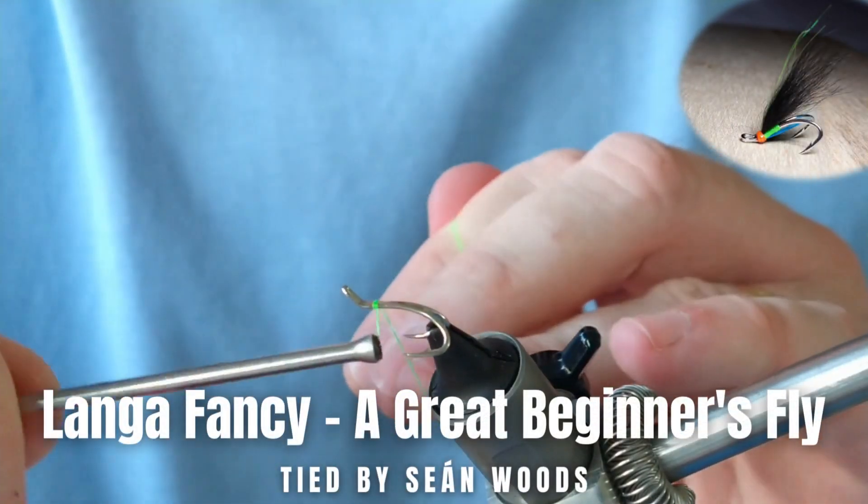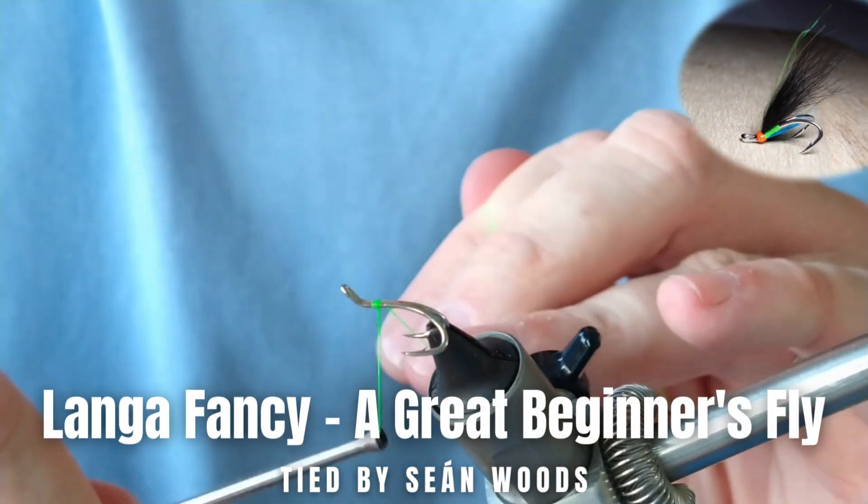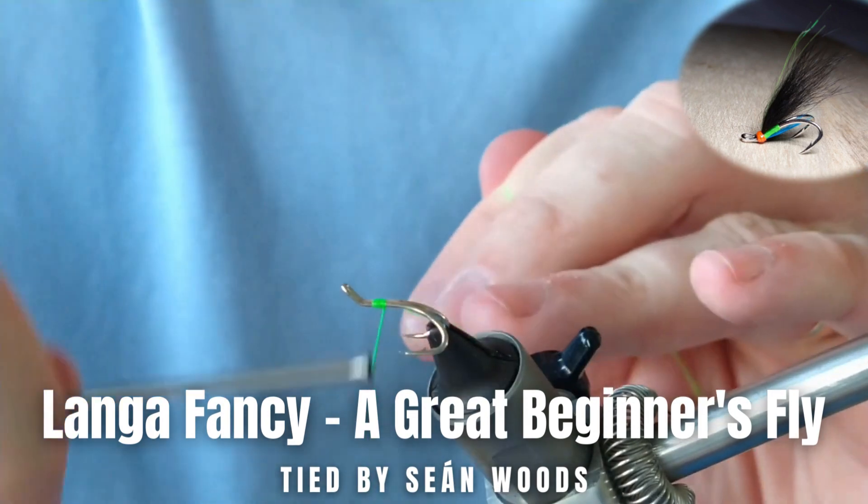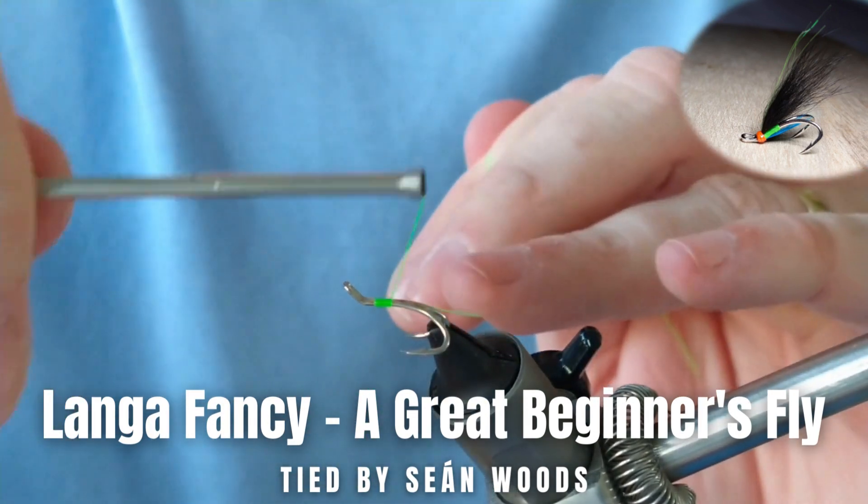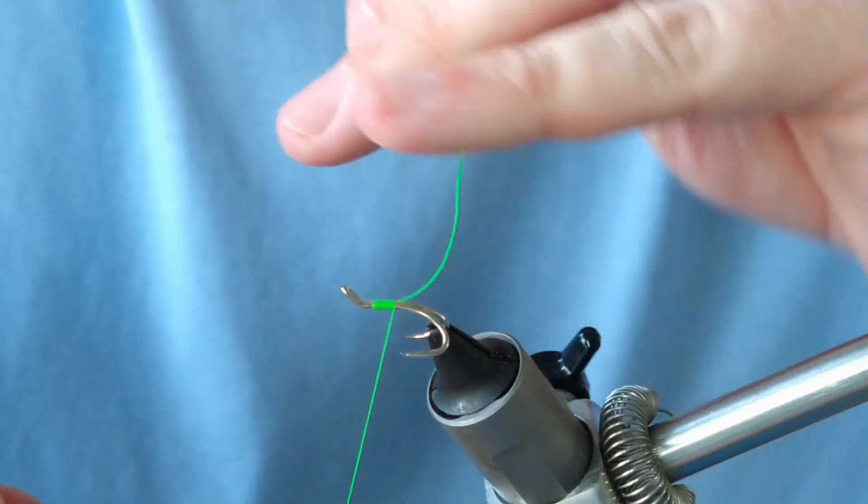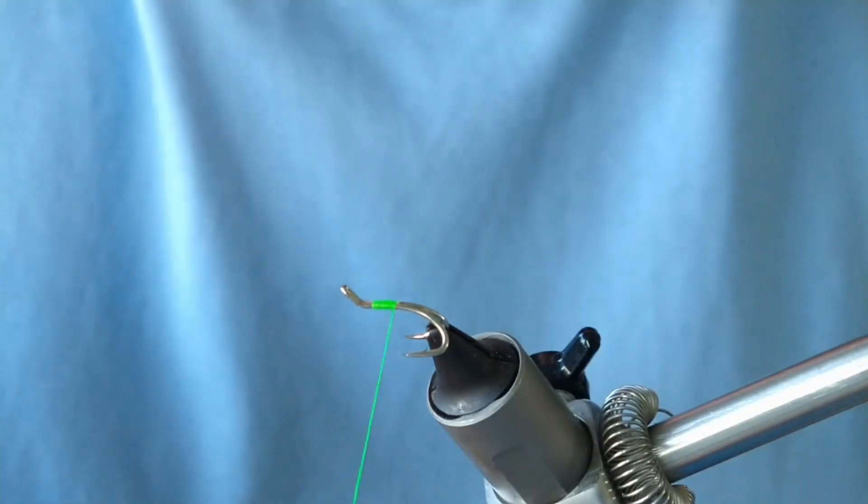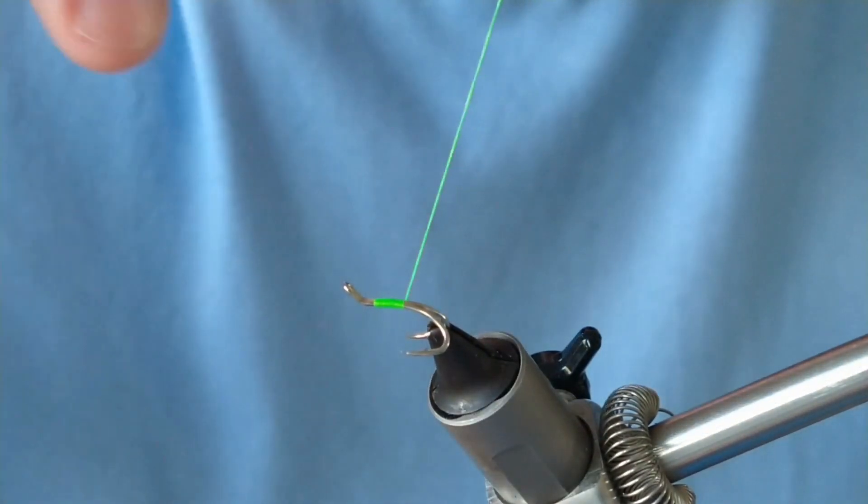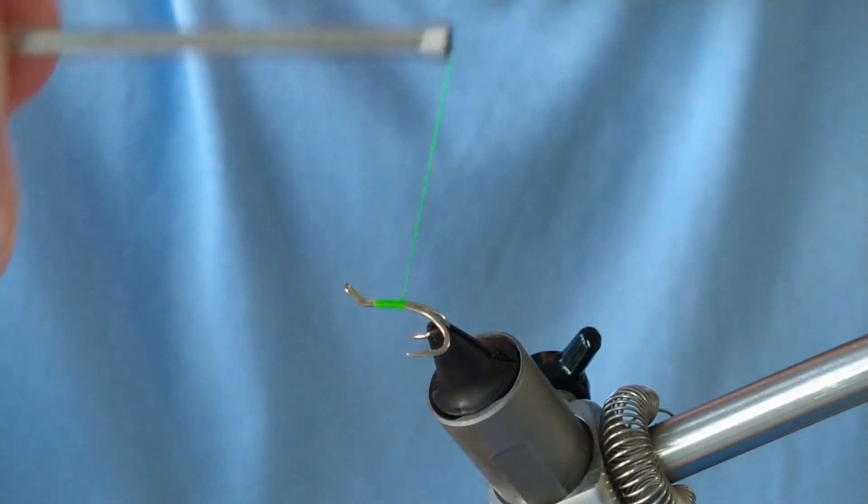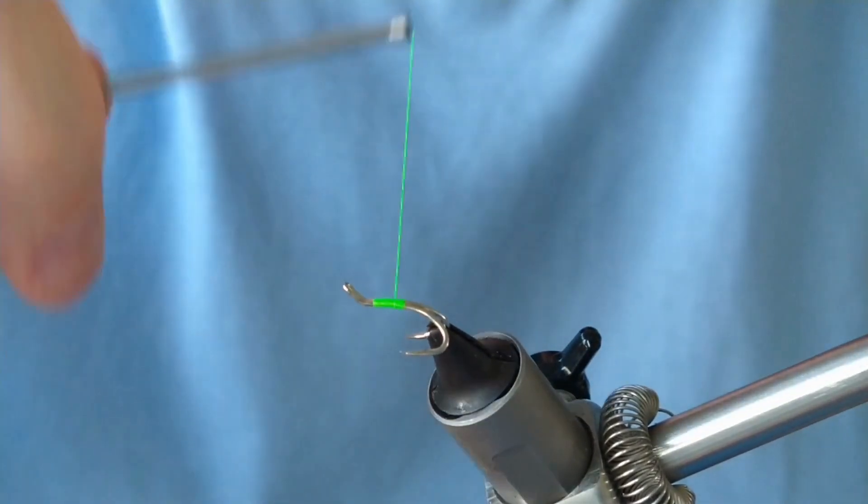Okay folks, thanks so much for joining us. Now we're tying a wee fly, it's a northern fly called the Langa Langa Fancy. It's a very basic fly but could be perfect for sea trout, for grills, little water grills especially at the moment, and also even Dollaghan as well.